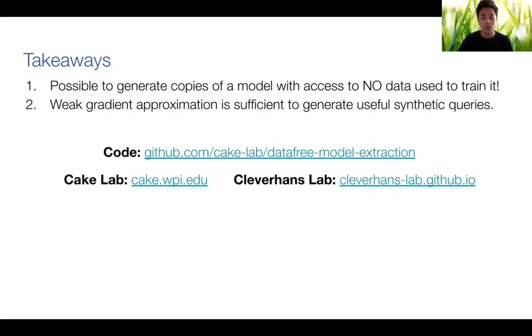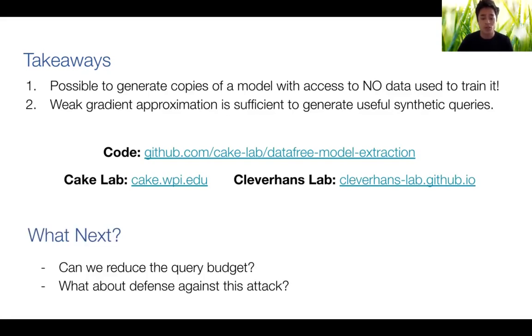The takeaways of this presentation are that it is possible to steal a machine learning model without access to any prior data, and we can do so with only weak gradient approximations. The code can be found on GitHub, and more details can be found on the CateLab and CleverHandsLab websites. The next steps for this project are to reduce the query budget and to find a defense against these attacks. Thank you for your attention.